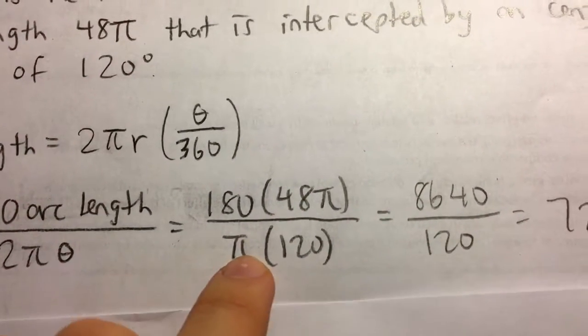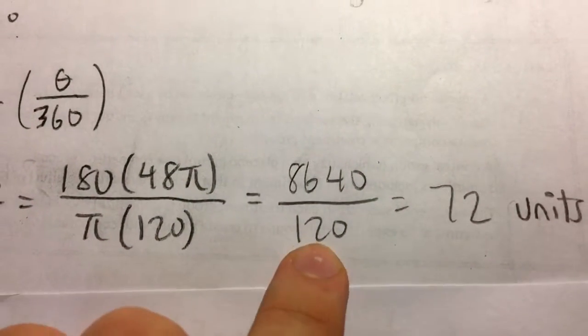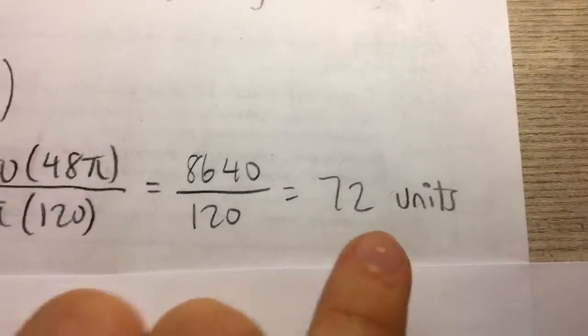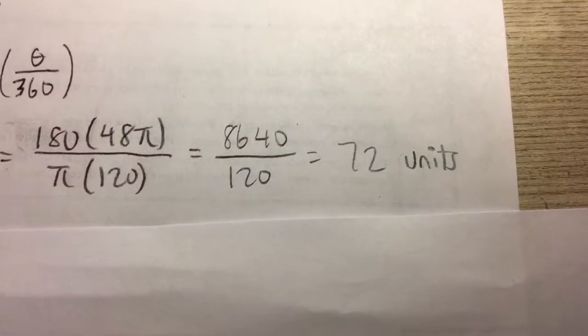And so now we can simplify. You can see the π over π that cancels out. 48 times 180 is 8640 divided by 120 is 72 units. And so our radius here is 72 units.